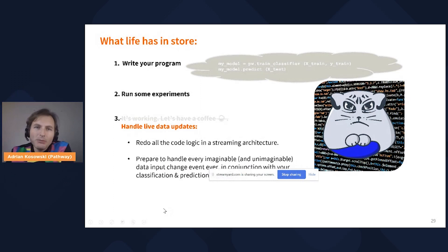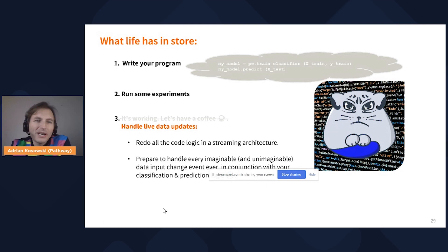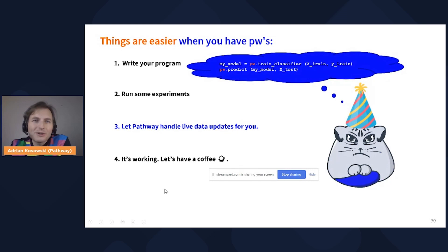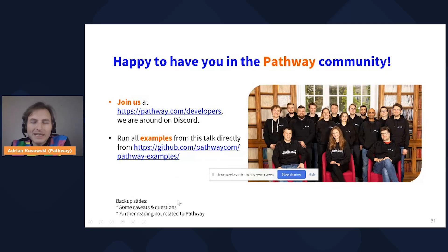The main takeaway: streaming life had some pains in store for us — there was no time for a coffee. However, if you go for Pathway, you let Pathway handle live data updates for you and things get easier. Your code is basically what it was in the batch sense, just deployed in streaming and at scale. It's a pleasure to premiere Pathway's open beta. We'd love to have you part of the Pathway community — join us on our website and Discord. Don't hesitate to experiment with the examples and have fun with Pathway.